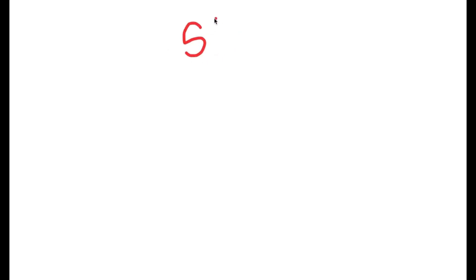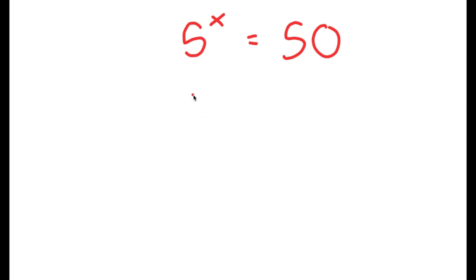In this video, I'm going to be solving the equation 5 to the power of x is equal to 50. To first start with this problem, let's test different values of x. So if x is 1, then I get 5 to the power of 1, which is equal to 5, and this is too low.